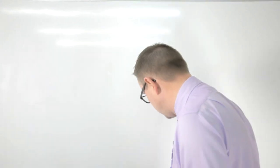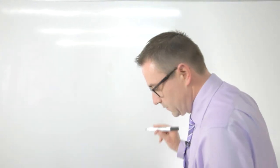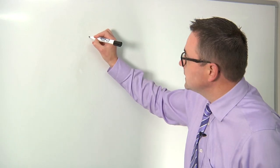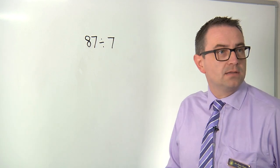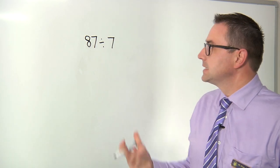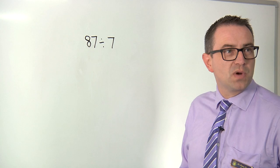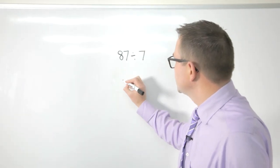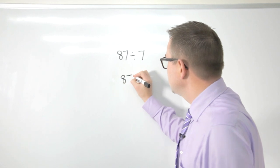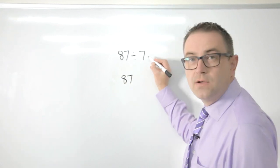I know now and the children would quickly see as they use whichever method was appropriate, but there's going to be a remainder left here. So if I use chunking briefly, 87, I straight away know that 10 lots of 7, 10 groups of 7 make 70, so I'll take that away leaving me with 17.